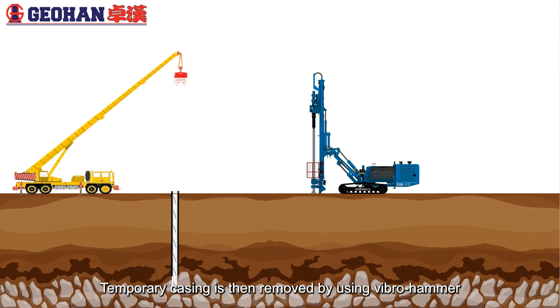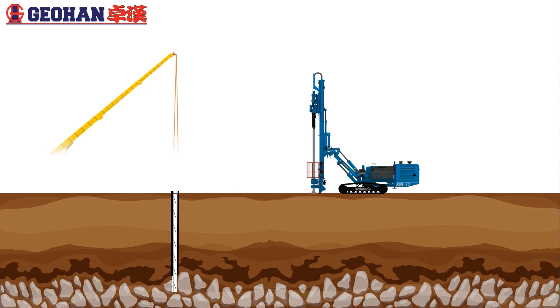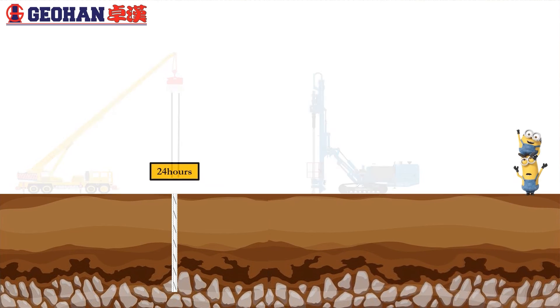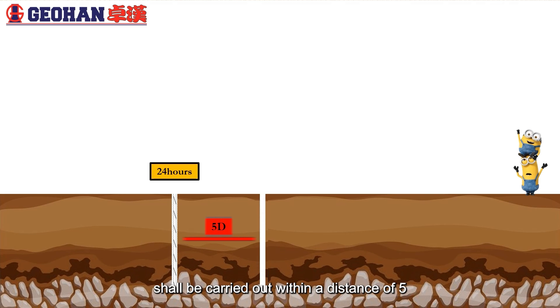Temporary casing is then removed by using vibro hammer. Temporary casing shall be withdrawn slowly to ensure no necking of the pile at any level. No micropile excavation shall be carried out within a distance of 5 pile diameters center to center from an open pile under excavation or a pile which has been grouted less than 24 hours.